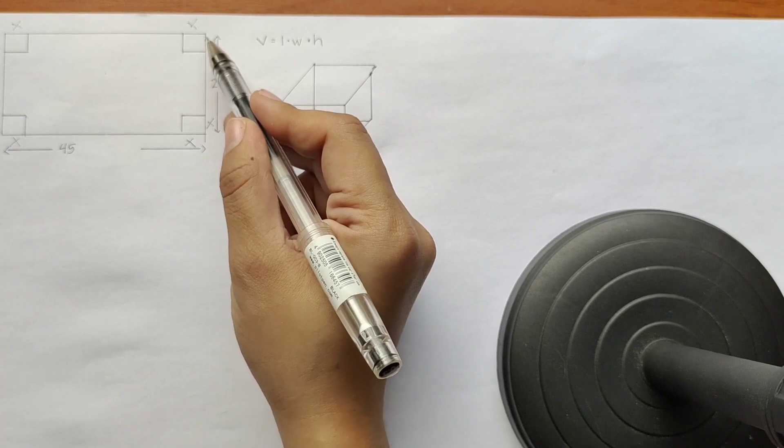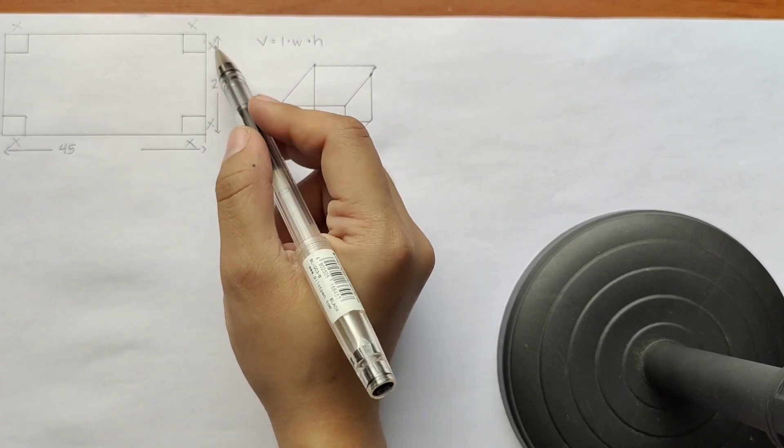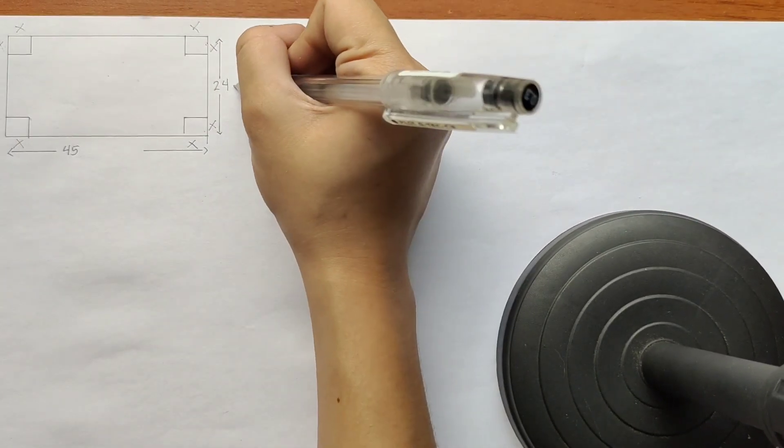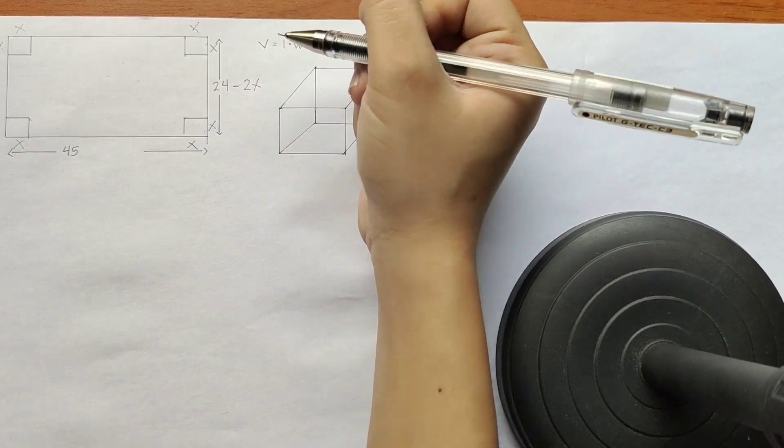So because we'll be cutting 2x here, that's 24 minus 2x. And on the side as well, we'll be cutting 2x.